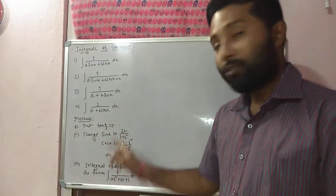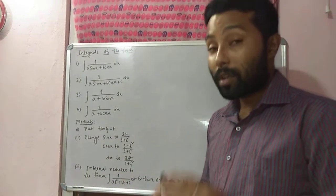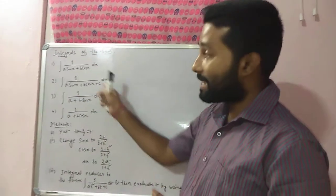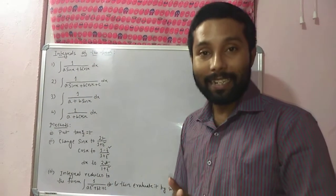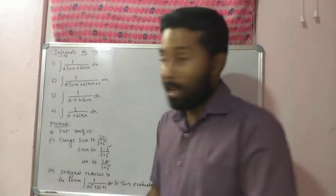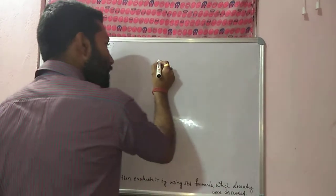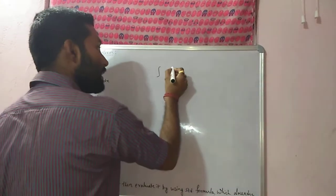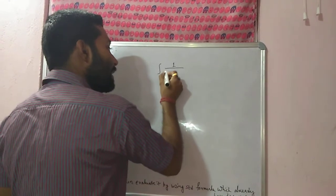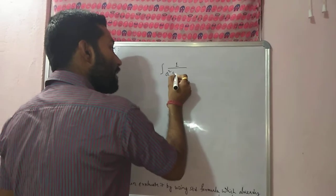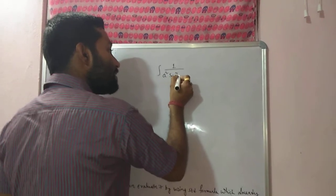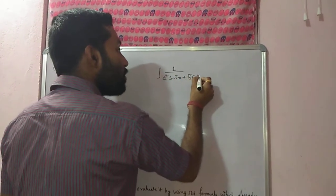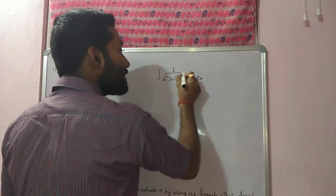You may have some confusion: the last class was almost like this. Yesterday's form was 1/(a²sin²x + b²cos²x) dx — that is the difference.